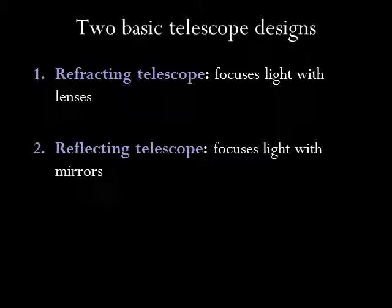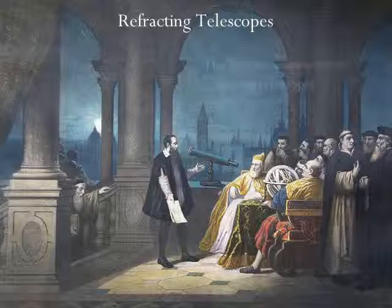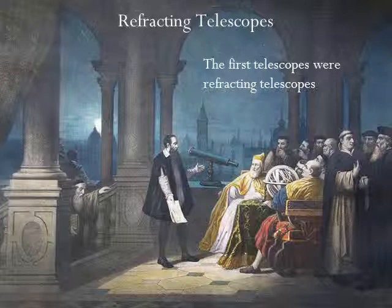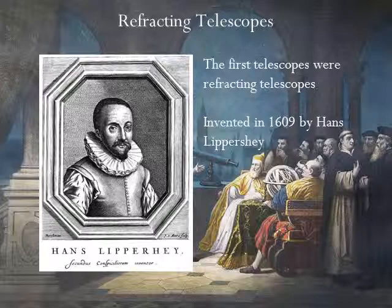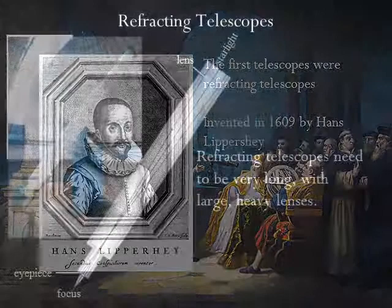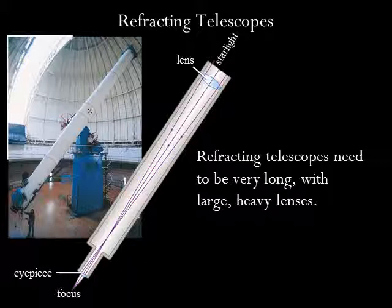Telescopes come in two basic designs: refracting and reflecting. A refracting telescope uses transparent glass lenses to collect and focus light, while a reflecting telescope uses mirrors. The earliest known working telescopes were refracting telescopes. They appeared in 1608 and the design is credited to German-Dutch spectacle maker Hans Lippershey. Galileo didn't invent the telescope, but he did improve and optimize the design for astronomical observations. Refracting telescopes need to have long tubes and they tend to have large, heavy lenses. The telescope shown here is the world's largest refracting telescope, the one-meter refractor at the University of Chicago's Yerkes Observatory.